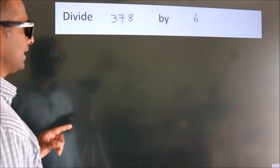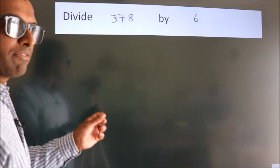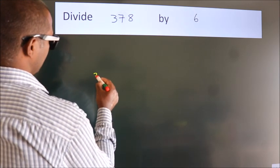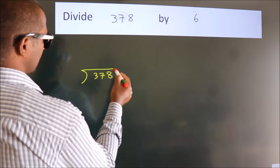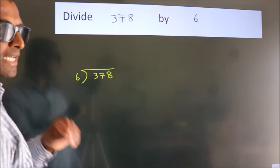Divide 378 by 6. To do this division, we should frame it in this way. 378 here, 6 here. This is your step 1.